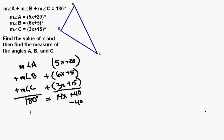If we subtract 40 from both sides of the equation, we now have 140 is equal to 14x. If we divide both sides of the equation by 14, we have x is equal to 10.